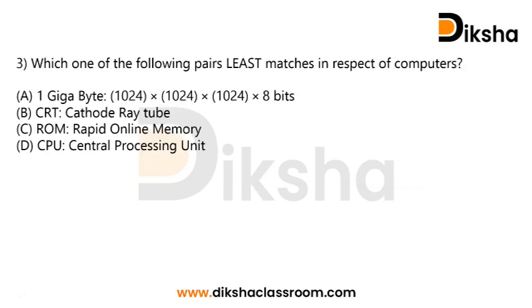The third question asks: which one of the following pairs least matches in respect of computers? The options involve terms such as one gigabyte, CRT, ROM, and CPU with their respective expansions or values. The question asks which pair is incorrectly matched. Read through the options and try to identify the incorrect one.